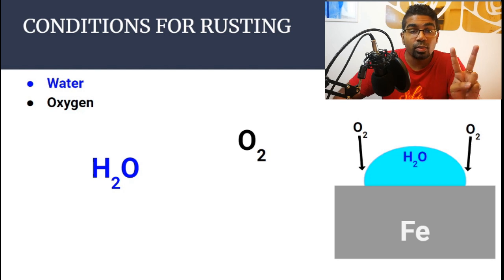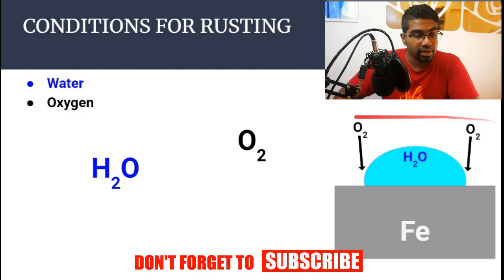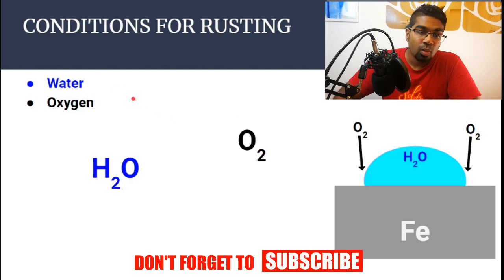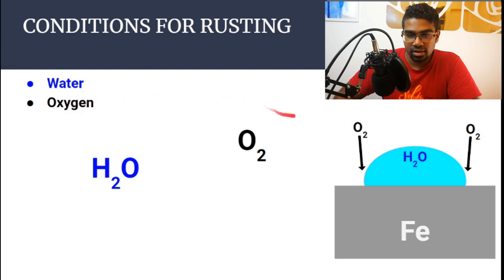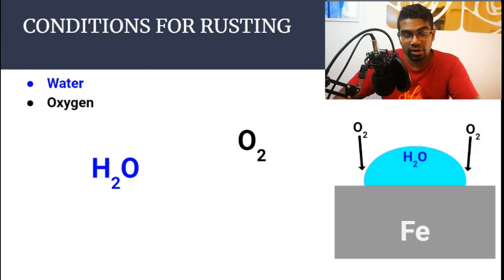There are only two things required for rusting to occur, and that is water and oxygen. We'll be studying the roles of water and oxygen through the chemical reactions.